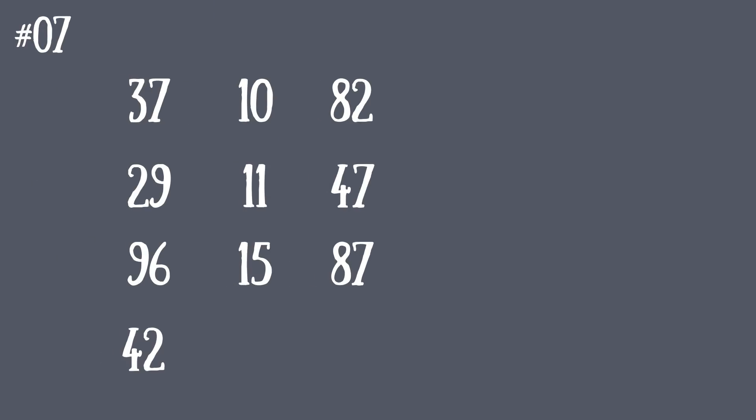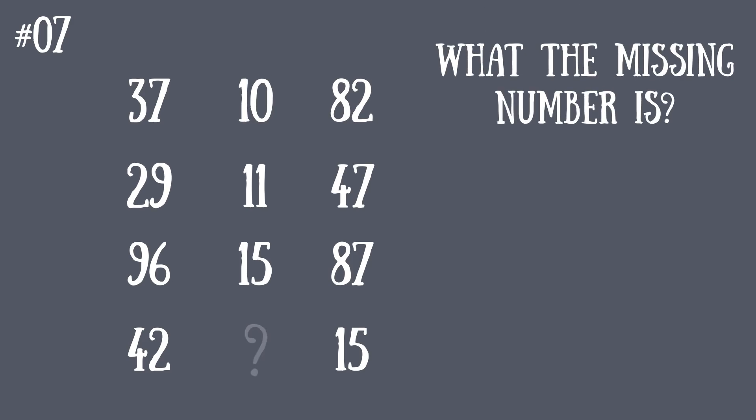Riddle number seven: Four lines of numbers—37, 10, 82; 29, 11, 47; 96, 15, 87; 42, question mark, 15. So what number should be in the place of the question mark? You have some time to think about it—15 seconds, I think.